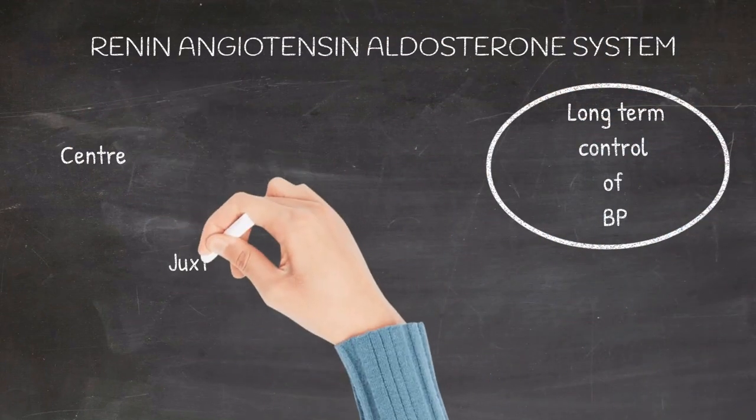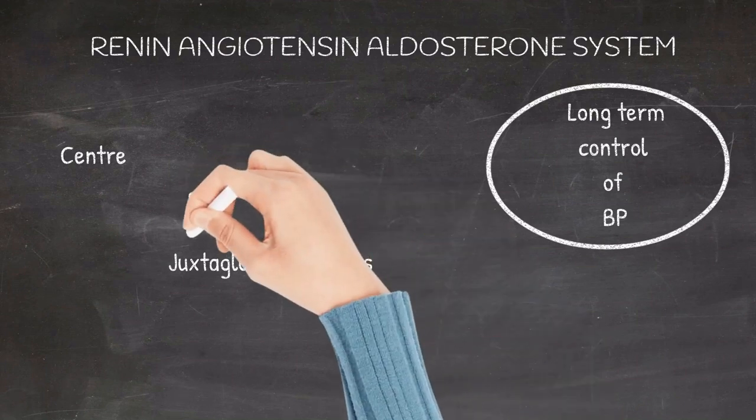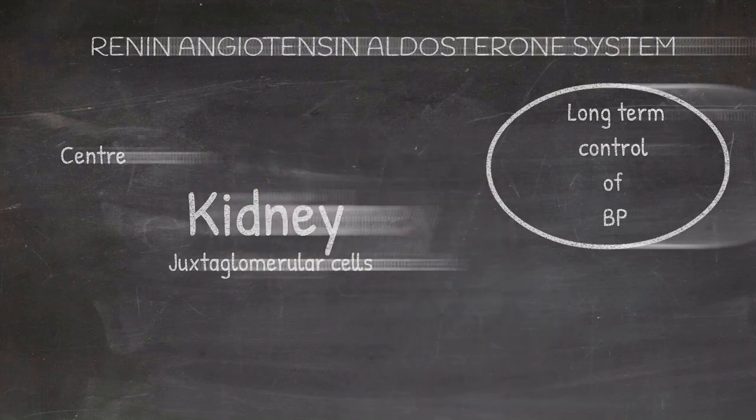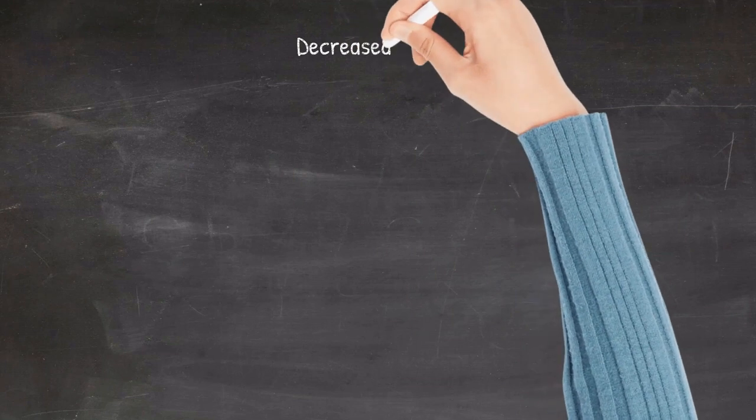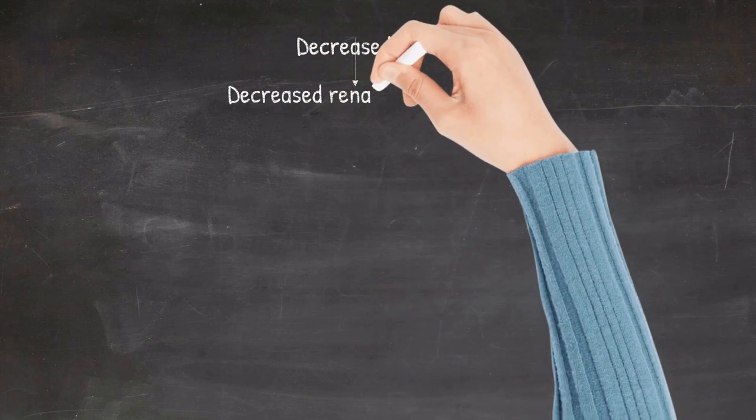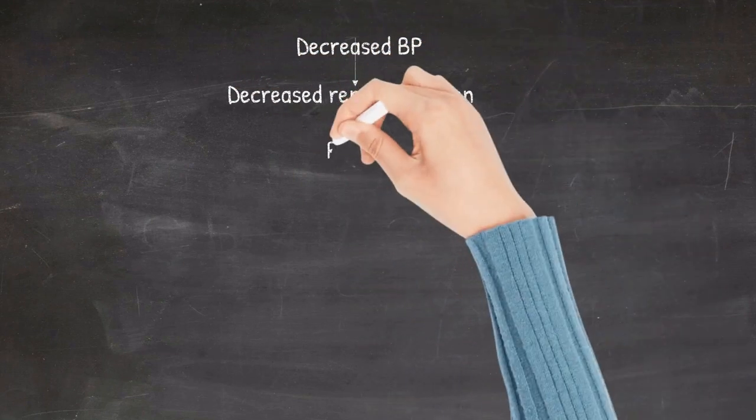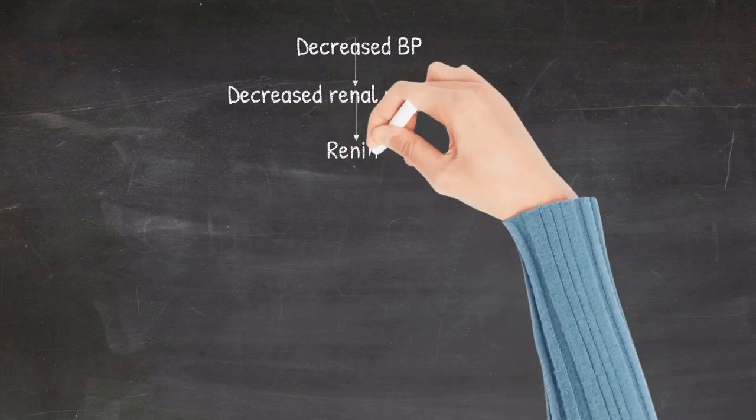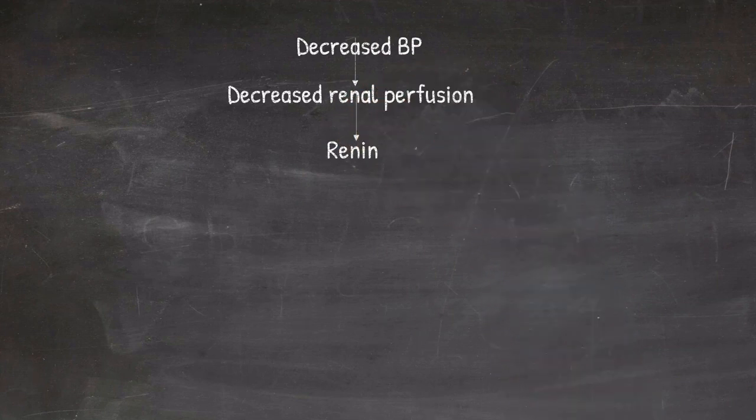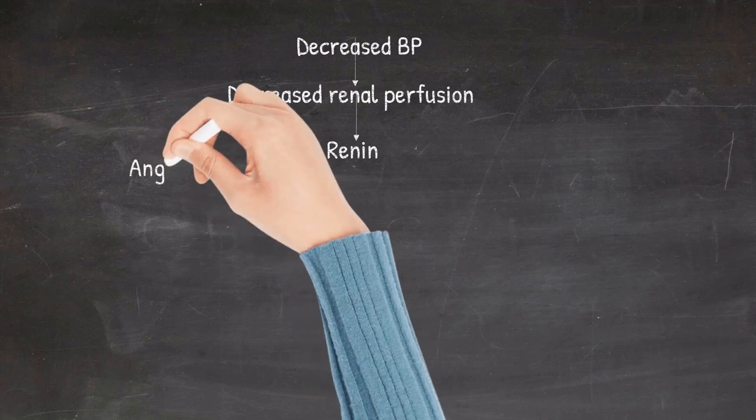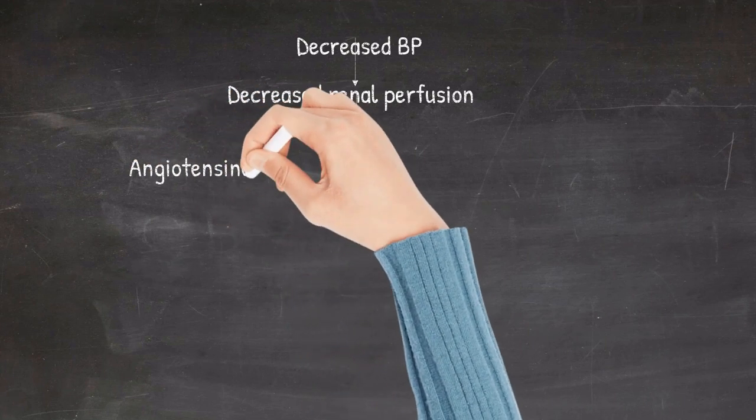The center of this is the juxtaglomerular cells of the kidney. If the blood pressure is reduced, there is reduction in the renal perfusion, and this would stimulate the release of renin from the juxtaglomerular cells.